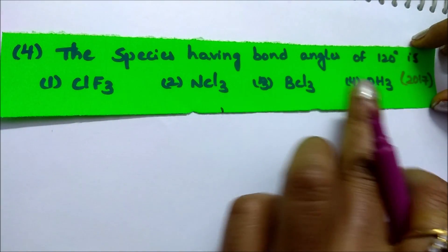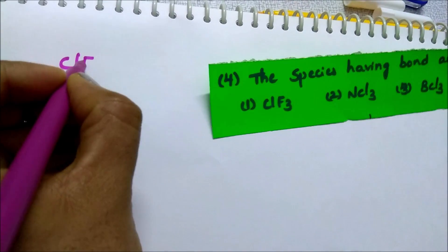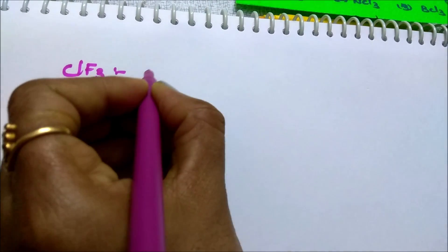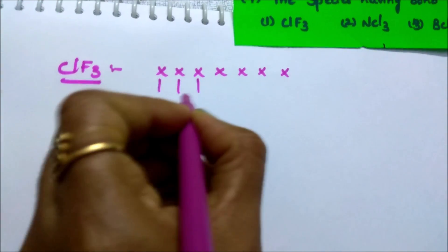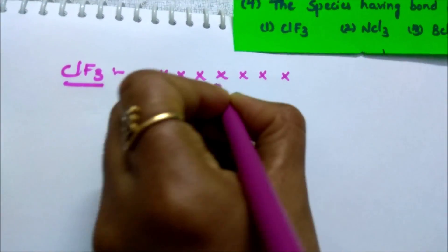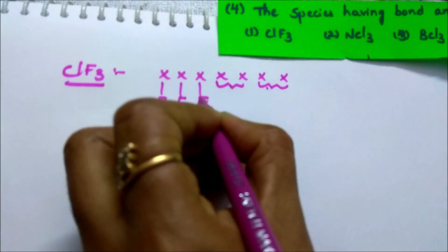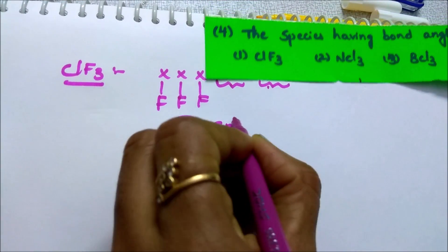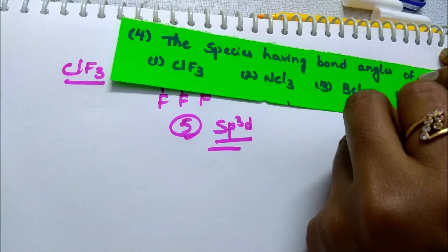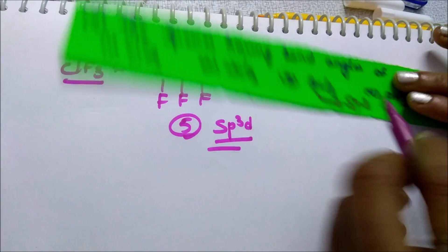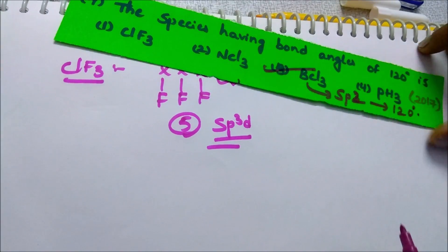Next question: which species has a bond angle of 120 degrees? Find the hybridization of all given species. For ClF3: chlorine has 7 valence electrons, each fluorine is monovalent. Total comes to 5, so hybridization is SP3D. You will find that only BCl3 gives SP2 hybridization.